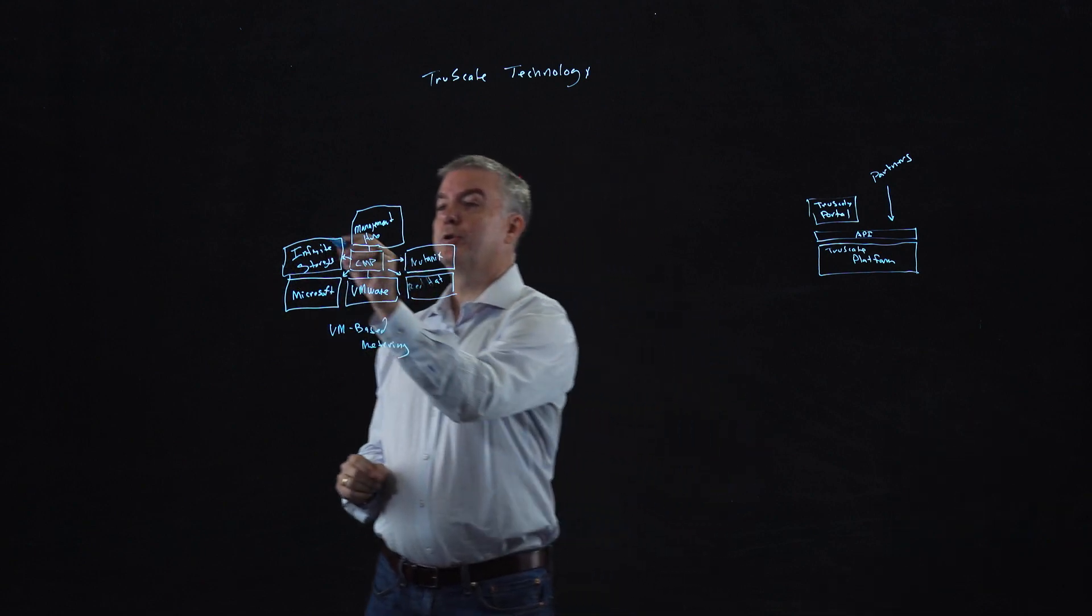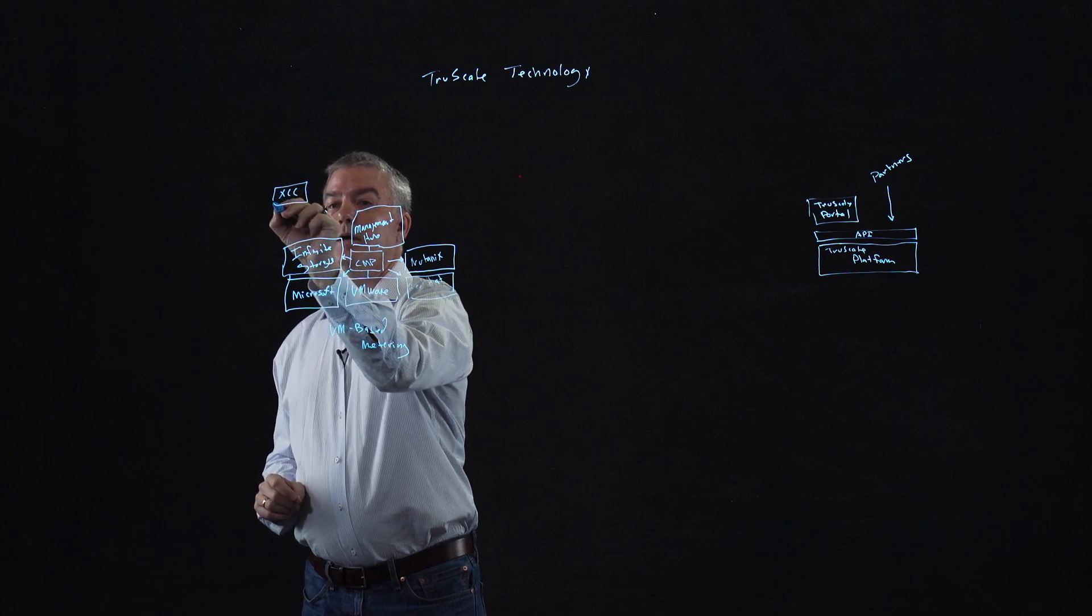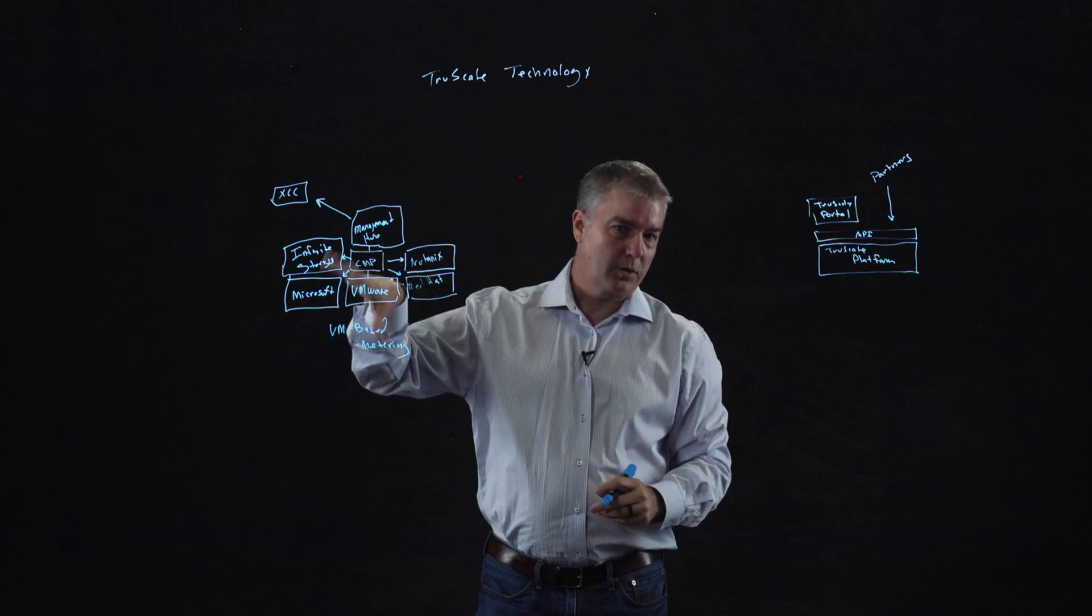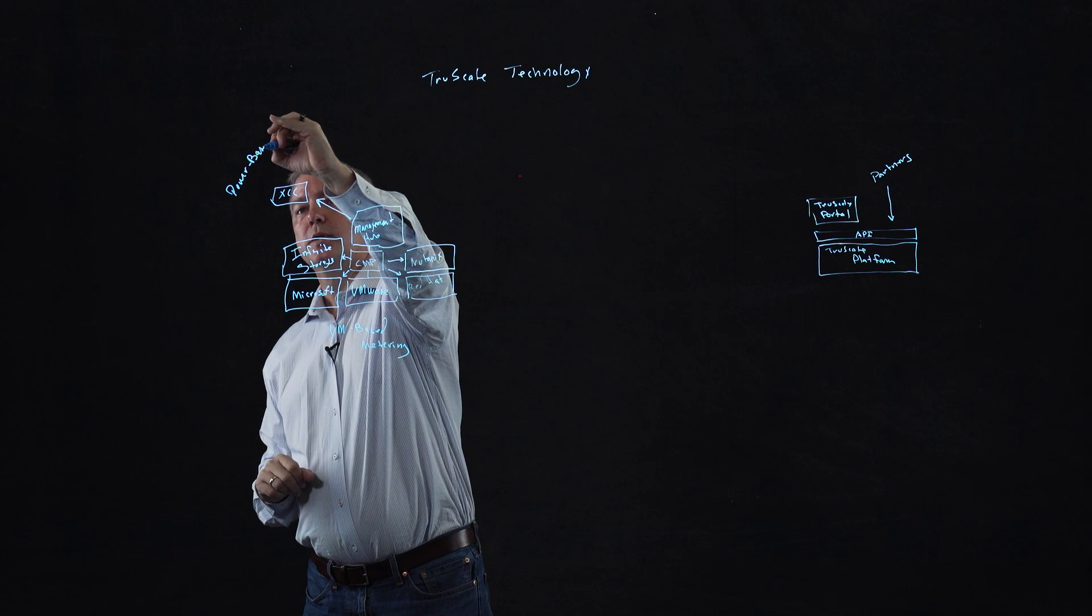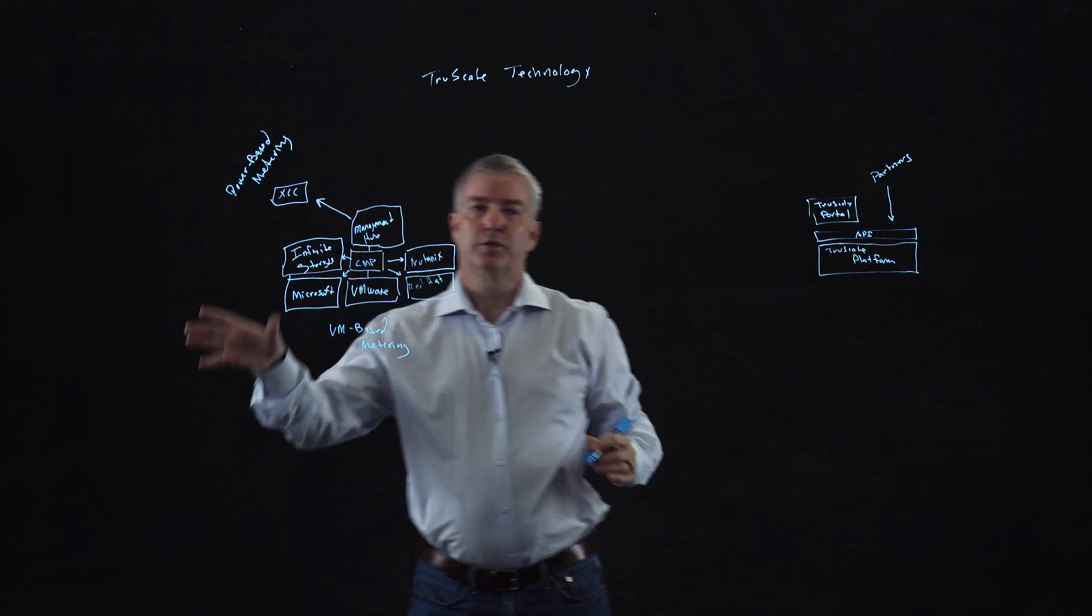We also have our traditional power-based metering, which our customers love. And it's out of band, and it's through the management hub, and it reduces all the software running. And it's a very efficient way of metering the technology and charging for the technology of the hardware that you're using.